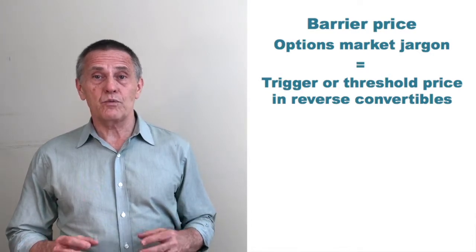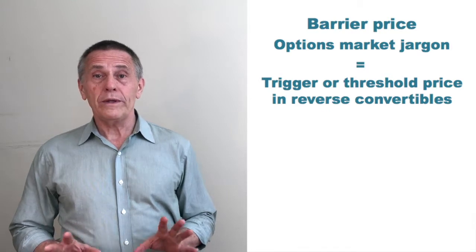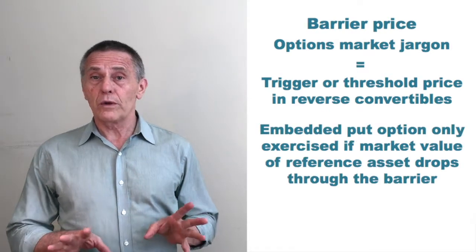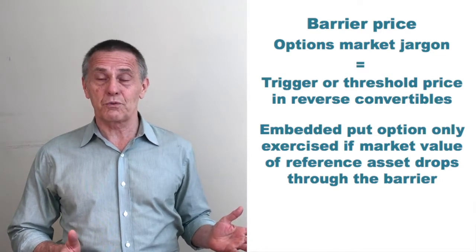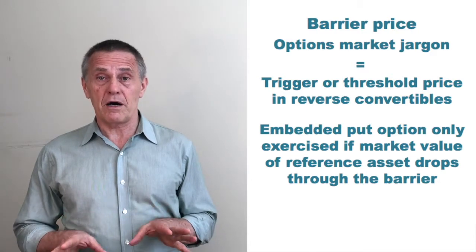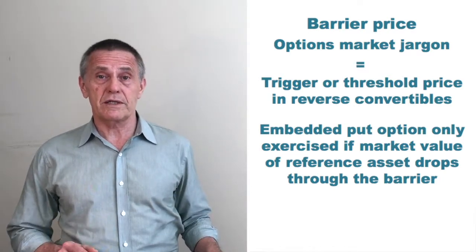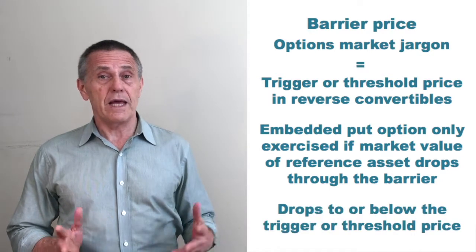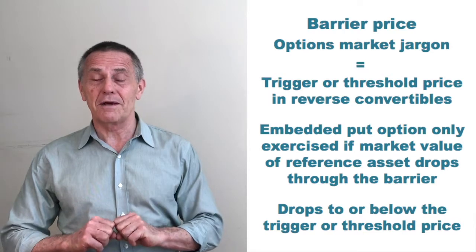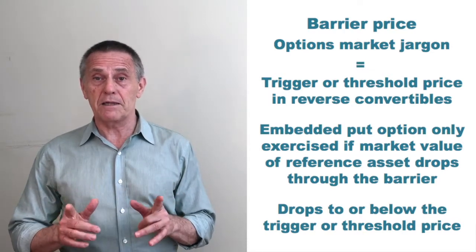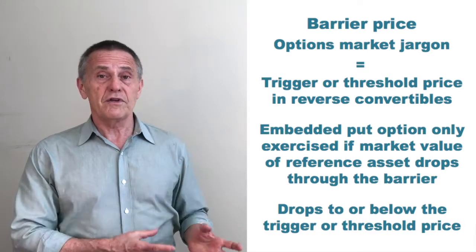Let's say we're looking at a reverse convertible where the threshold or trigger level was set at 70 percent of the initial value. What that would mean is if the reference asset went up, or declined as long as the decline was no more than 30 percent — i.e., the value of the reference asset didn't drop below the threshold or trigger price — the investor would get back their initial investment, their par value, plus any coupons they had earned. However, if the price of the reference asset hit or fell below the threshold, the investor would be stuck — they'd end up having to buy the stock or index that's being put to them at the strike price, i.e., the par value of their security. Rather than getting back their par value, they would either get shares or the equivalent value in cash of the depreciated asset.